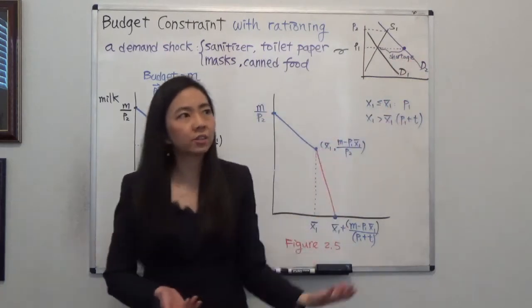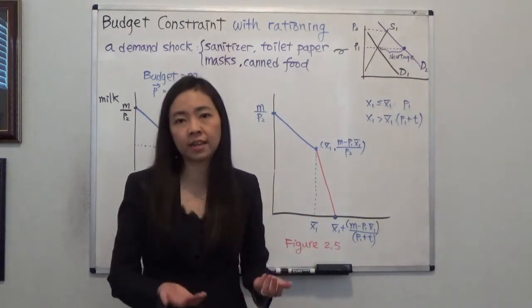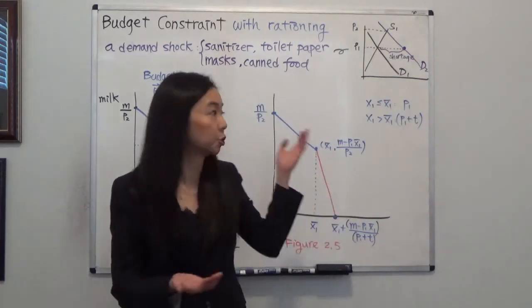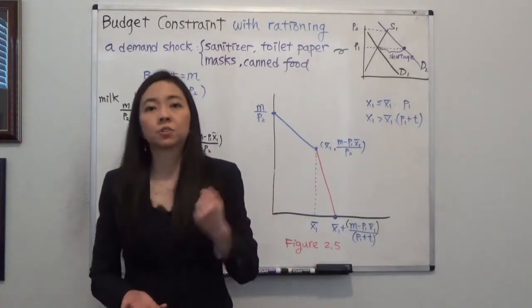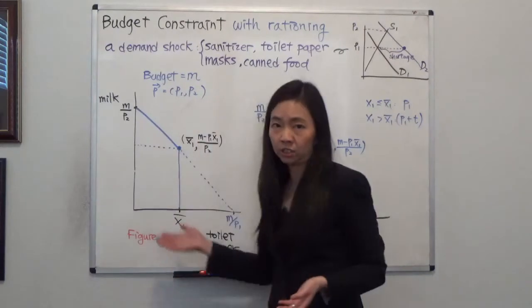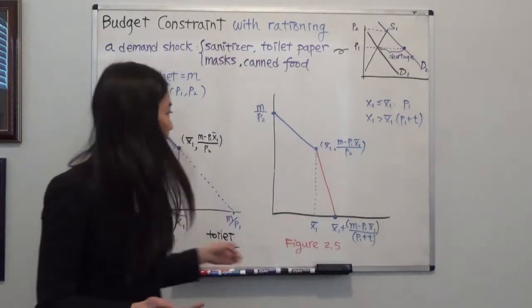So how can shops make sure that every family has their toilet paper or has their hand sanitizer if they need it? So what shops do is to ration the goods. So there are two ways of rationing.